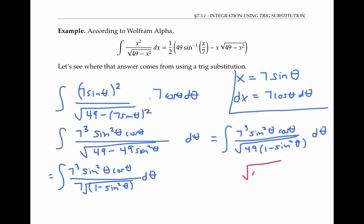The square root of cosine squared theta is equal to cosine theta. Well, actually, it's equal to the absolute value of cosine theta, which is the same thing as cosine theta if cosine theta is positive.